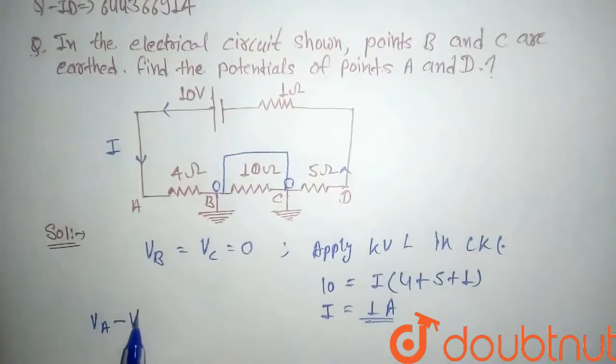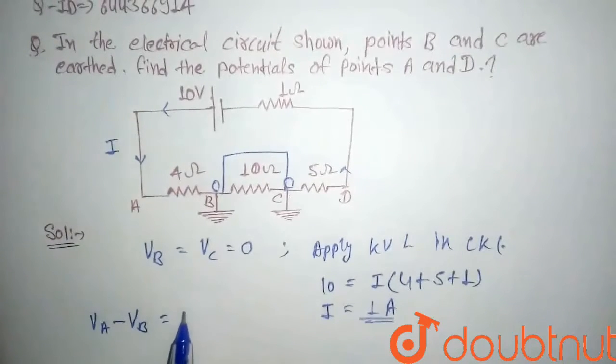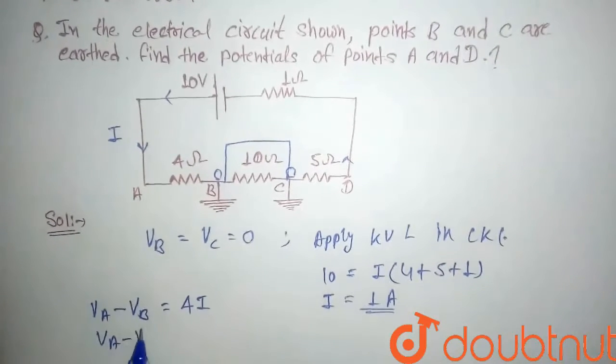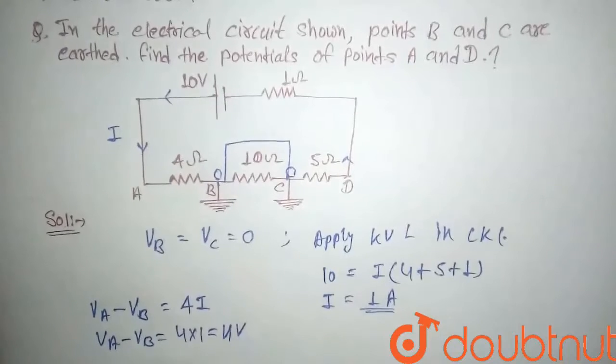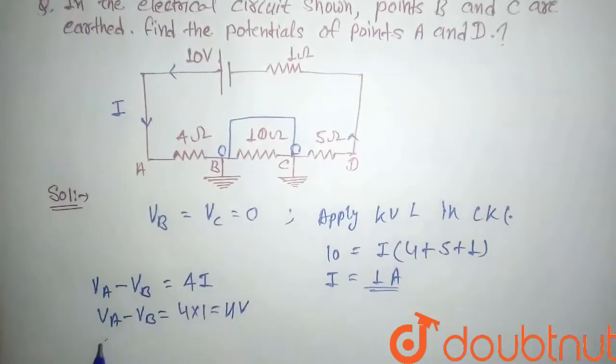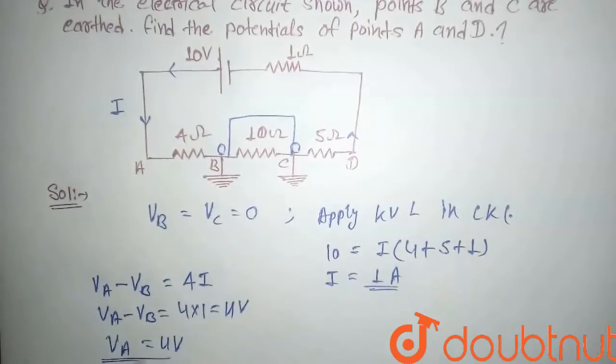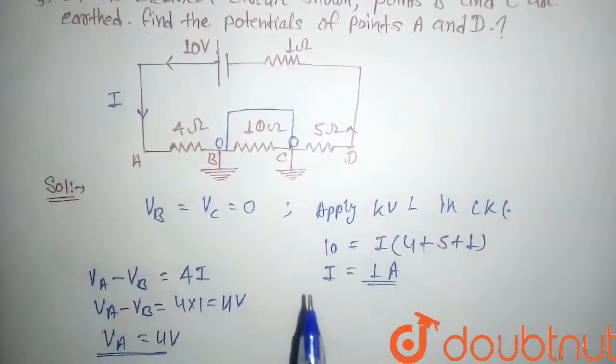So potential difference here, VA minus VB will be equal to 4 into 1, will be equal to 4 volt. So here the potential at B is 0, so VA will be equal to 4 volt. This is the potential at point A. Now if you see...